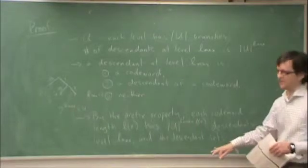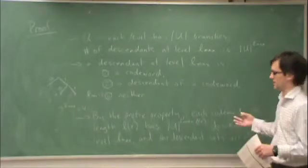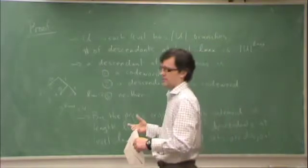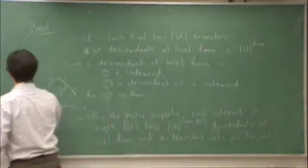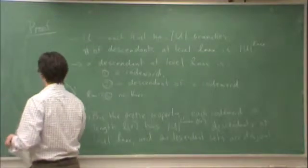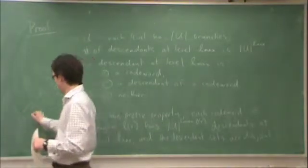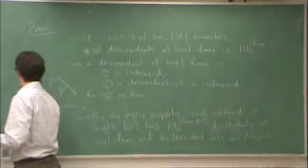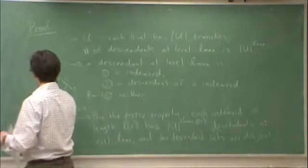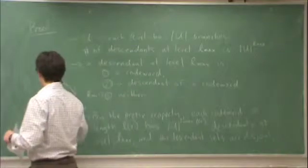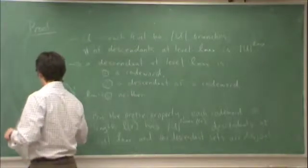In other words, each descendant can only be the descendant of exactly one codeword because no codeword can be the descendant of any other codeword. So for instance, if we extended this code like so, here's level 0, level 1, level 2.